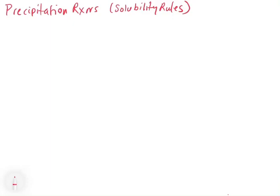In this video, we're going to look at precipitation reactions. Precipitation reactions are the first type of metathesis reactions, and these ones involve the formation of an insoluble solid. And that is how ions are removed from the solution.